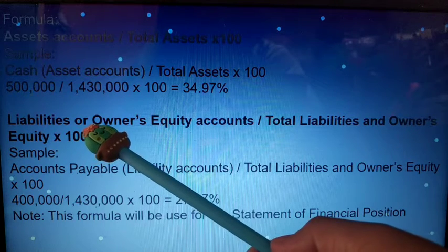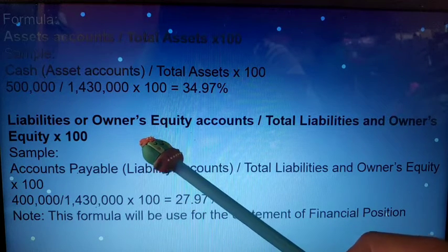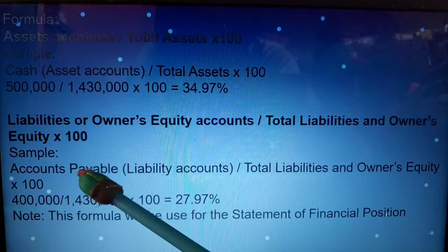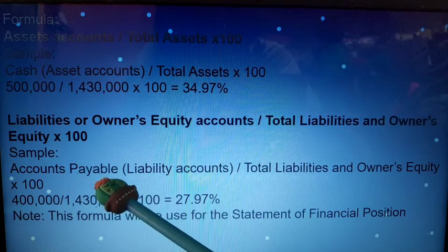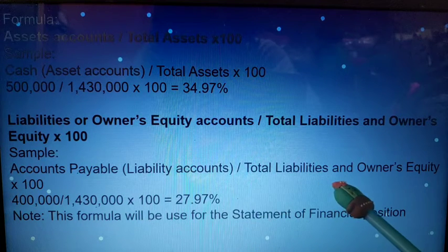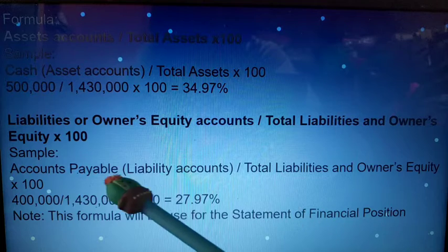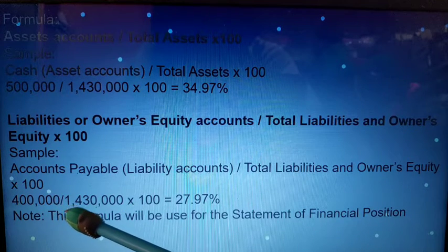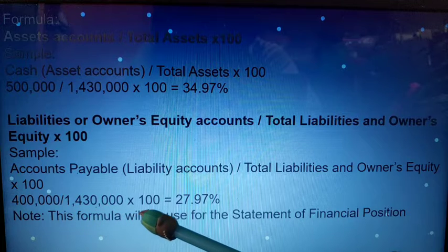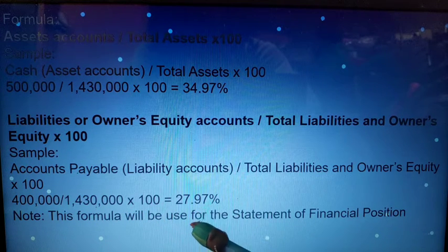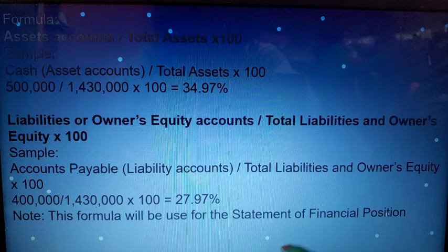The base amount for the liabilities and owner's equity is the total liabilities and owner's equity. So if the account is accounts payable, it is a liability account divided by the total liabilities and owner's equity. So 400,000 divided by 1,430,000 times 100 is 27.97%. This formula is to be used for the statement of financial position.